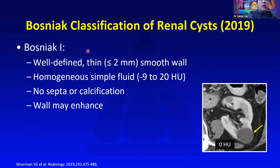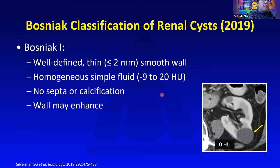For Bosniak 1 lesions, they should be well-defined, thin, smooth wall, homogeneous simple fluid, and no septation or calcification. The wall may enhance, especially on MRI, because we can see the wall better than perhaps on CT.